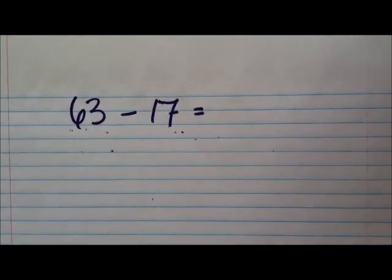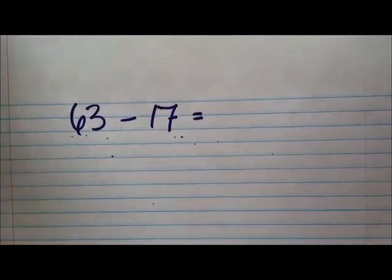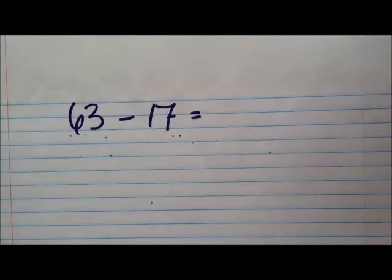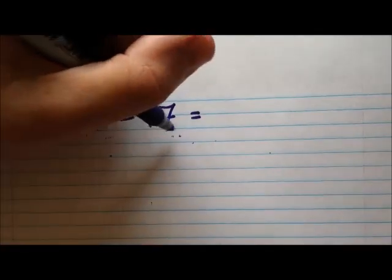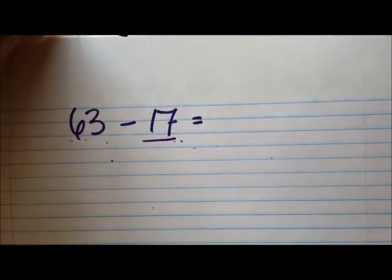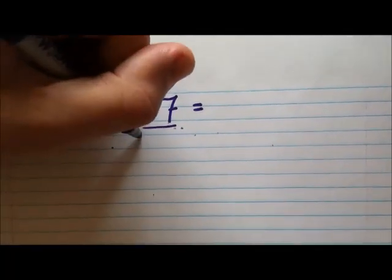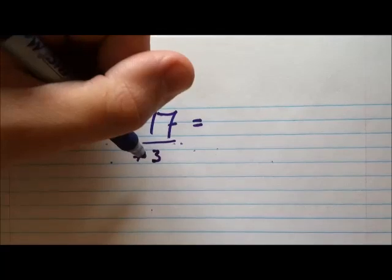So we have $63 minus $17. What I want to do is I want to make these numbers easier to use. So that means a number that ends in zero. So I'm going to choose $17. And we're going to make it a number that ends in zero that's really easy to use. That would be $20. $20 is really close by. All you have to do is add $3 to it. And that's going to turn that into $20.